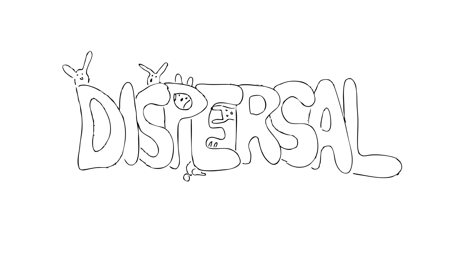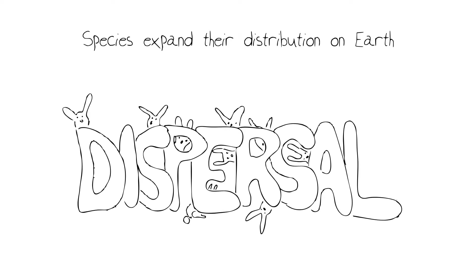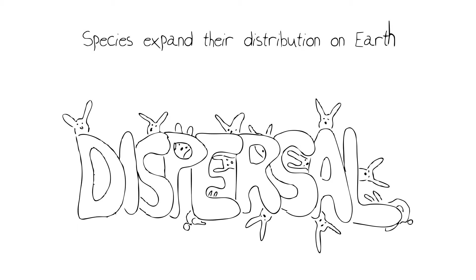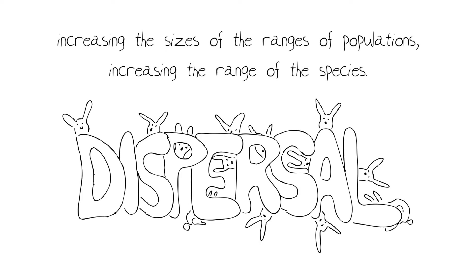This is basically the way that species of plants, animals, and other organisms expand their ranges, their distributions on Earth, through movements of individuals that increase the sizes of the ranges of populations, and therefore the ranges of the species themselves.